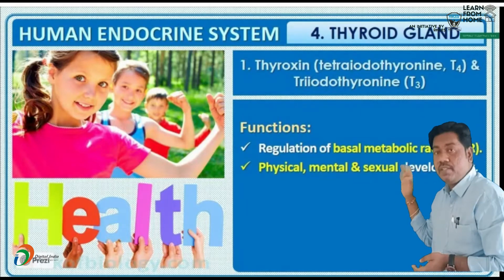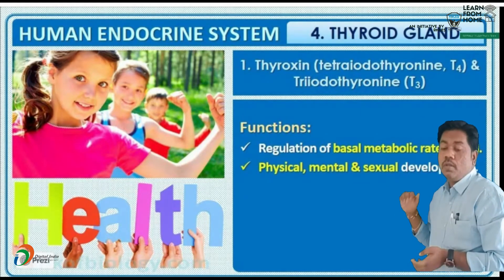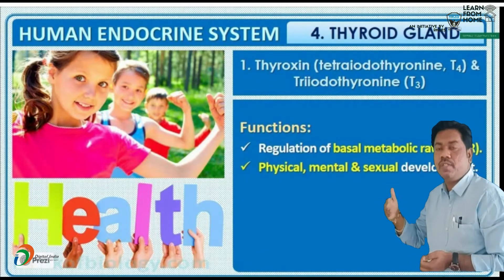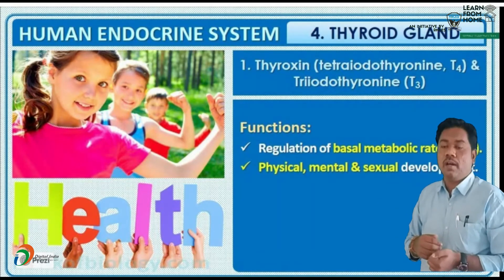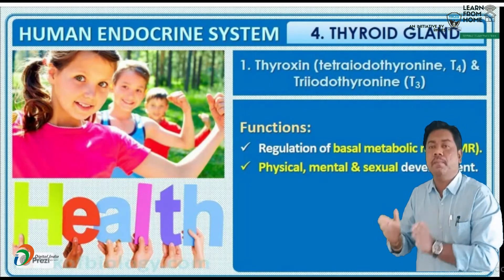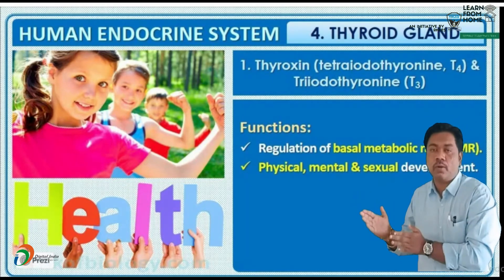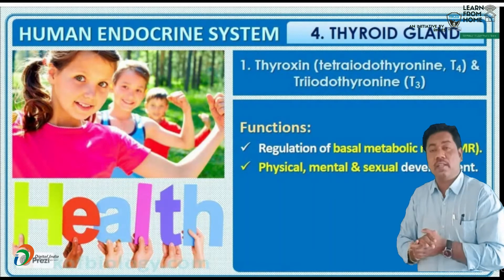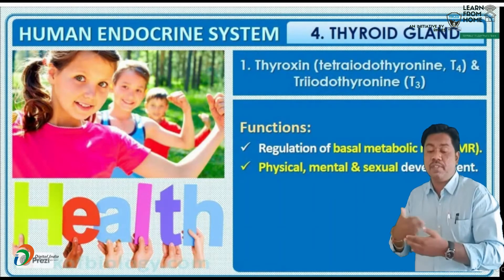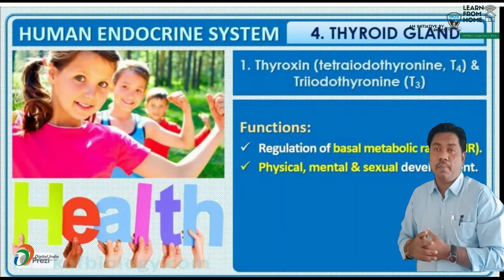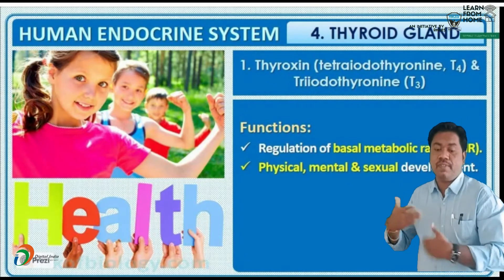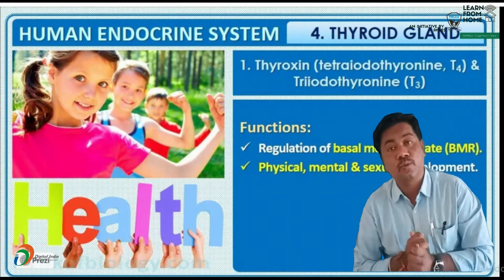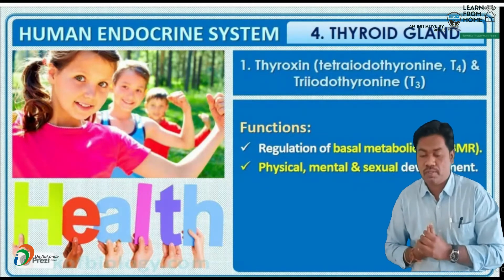The complete functions of T3 and T4 hormones include: regulating basal metabolic rate, affecting sexual, mental, and physical development, and supporting the formation of RBCs. The formation of RBCs is known as erythropoiesis. Hemopoiesis means the production of blood; production of RBCs specifically is erythropoiesis, which is stimulated by thyroid hormone.